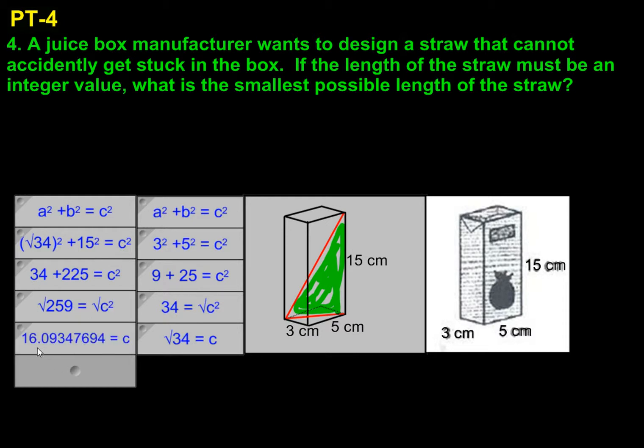That gives us 16.09347694 equals c. We need an integer value, and we need the smallest length possible so the straw won't fall in the box. If we rounded down, that would make the straw shorter than the overall box length diagonally, and that would enable the straw to fall in. So rounding up is the only thing that makes sense. We're looking at 17 centimeters.